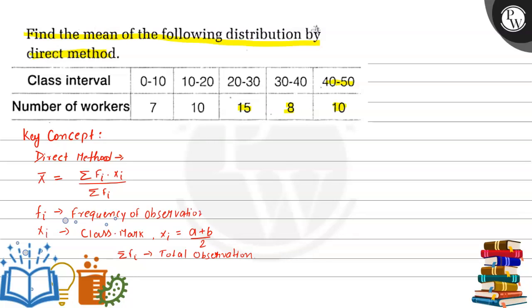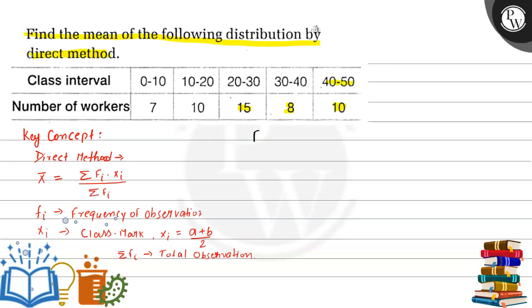So let us draw the frequency distribution table. In the first column we will keep class interval, in the second column we will keep the class mark, in the third column we will keep the frequency, and in the last column we will get product of fi times xi.